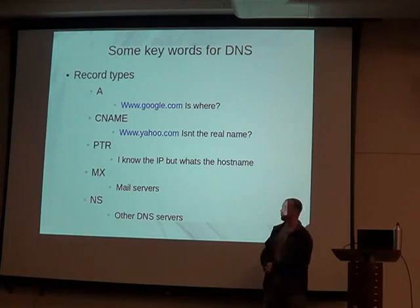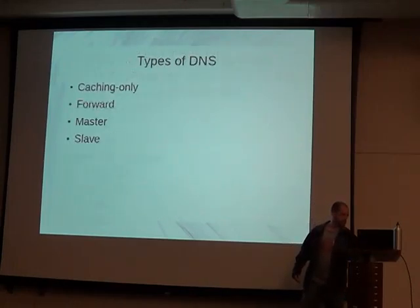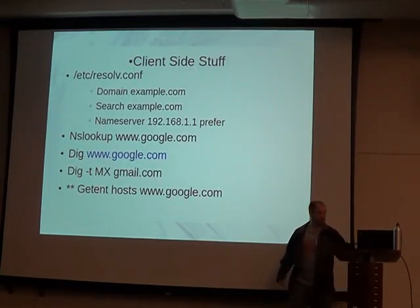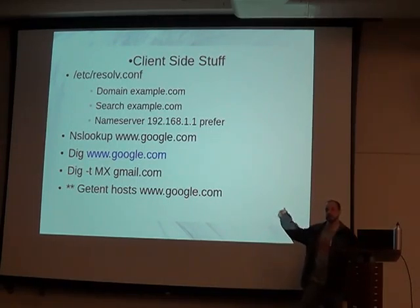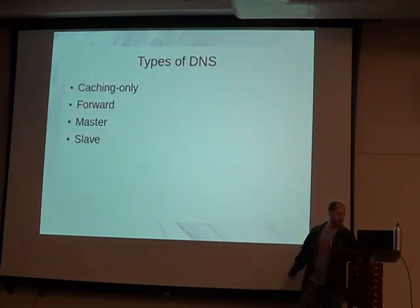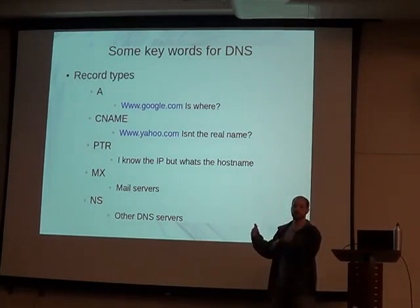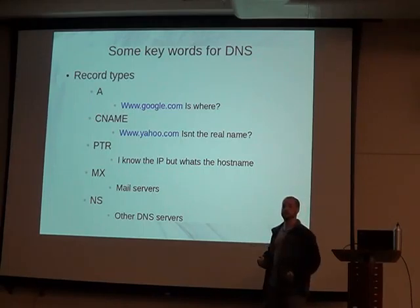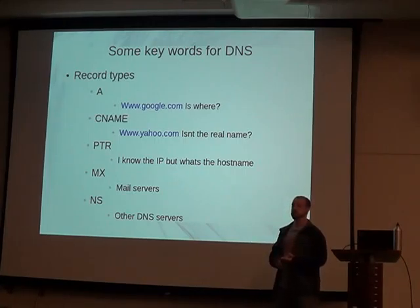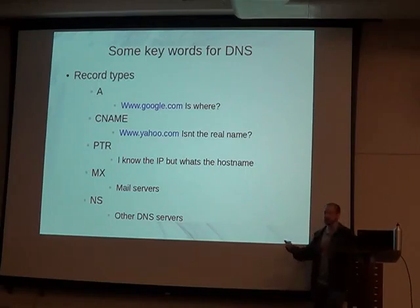MX is a mail record — it essentially says 'this is a mail server.' Going back to the 'dig -t MX gmail.com' command, if you ran that it will give you all the IP addresses for all the mail servers that Gmail uses. You have to actually specify that it's a mail server in the DNS config file for that zone. NS is similar — it's for other DNS servers, listing all your name servers. Some services will pull the NS records to get a list of all the DNS servers in your environment.